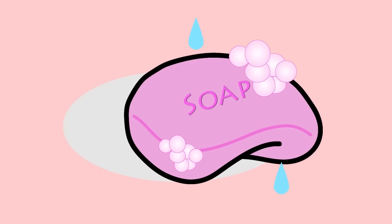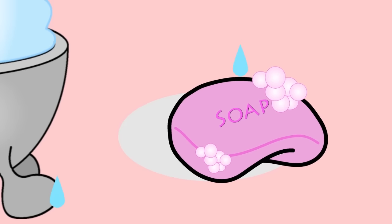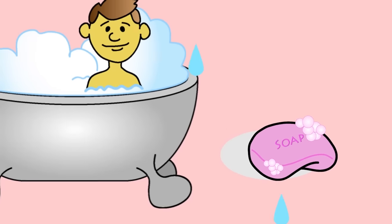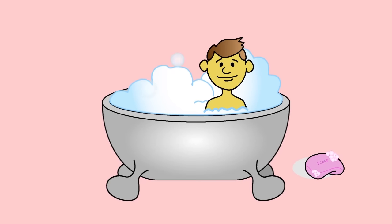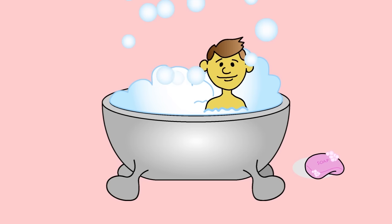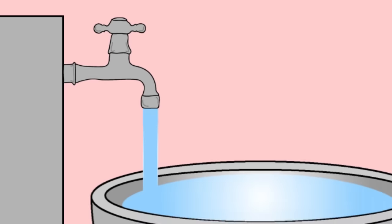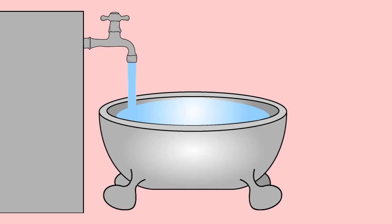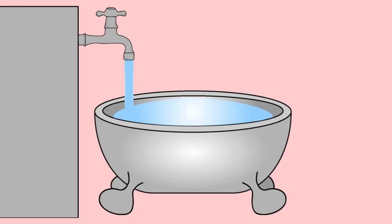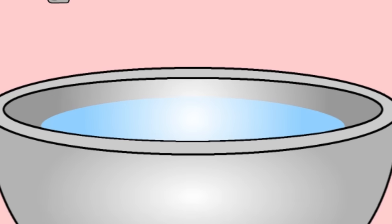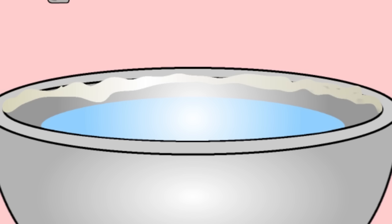If you wash with soap using rainwater, washing is easy and there are plenty of bubbles — we say the water is soft. But if you use well or tap water, it's sometimes difficult to get a lather and scum forms. In this case, we say the water is hard.